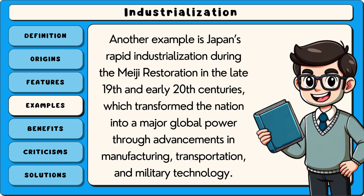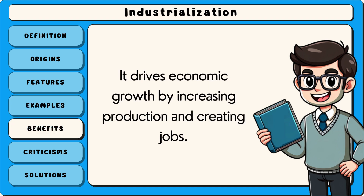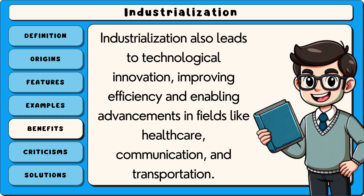Another example is Japan's rapid industrialisation during the Meiji Restoration in the late 19th and early 20th centuries, which transformed the nation into a major global power through advancements in manufacturing, transportation and military technology.